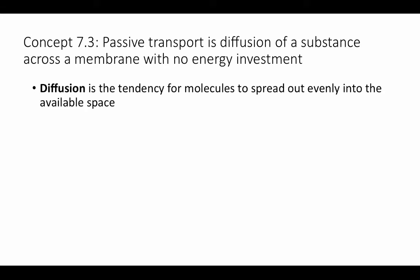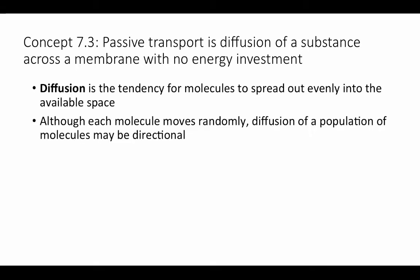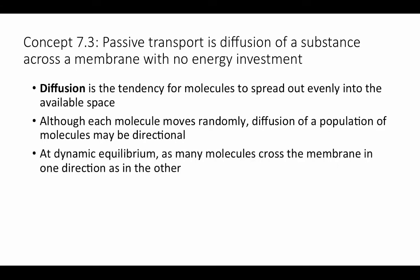Passive transport is primarily due to diffusion of molecules across a membrane, and this requires no energy investment — it happens completely spontaneously. Diffusion is the tendency for molecules to spread out evenly and fill a particular volume with consistent concentration throughout. Although each molecule moves randomly, a population of molecules may move directionally — we call this diffusion down a concentration gradient. At equilibrium, molecules are still moving, but as many cross the membrane in one direction as the other, so there is no net movement.